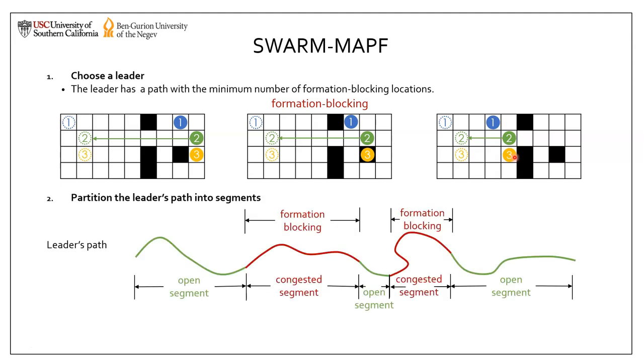After the leader is chosen, we then partition the leader's path into segments. Assume this is the leader's path. We mark the formation blocking locations on the path in red. And for each red part, we call it a congested segment. For each remaining part, we call it an open segment.